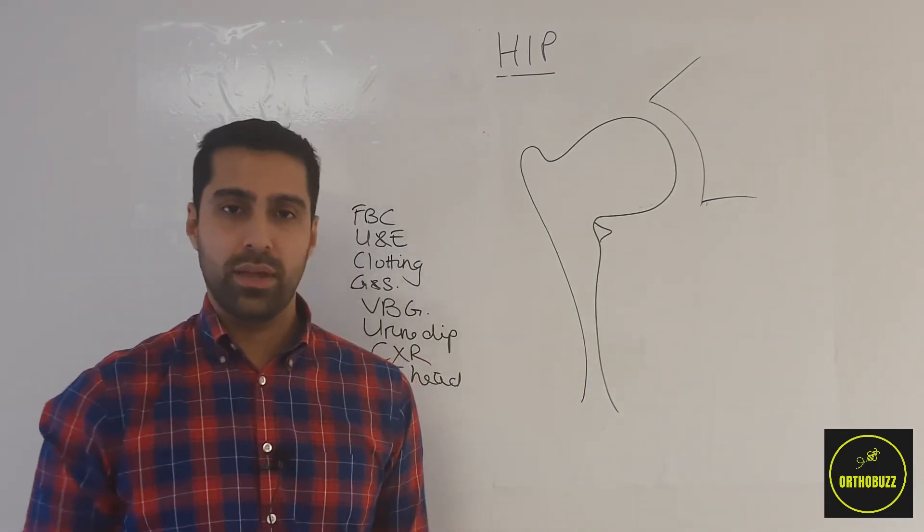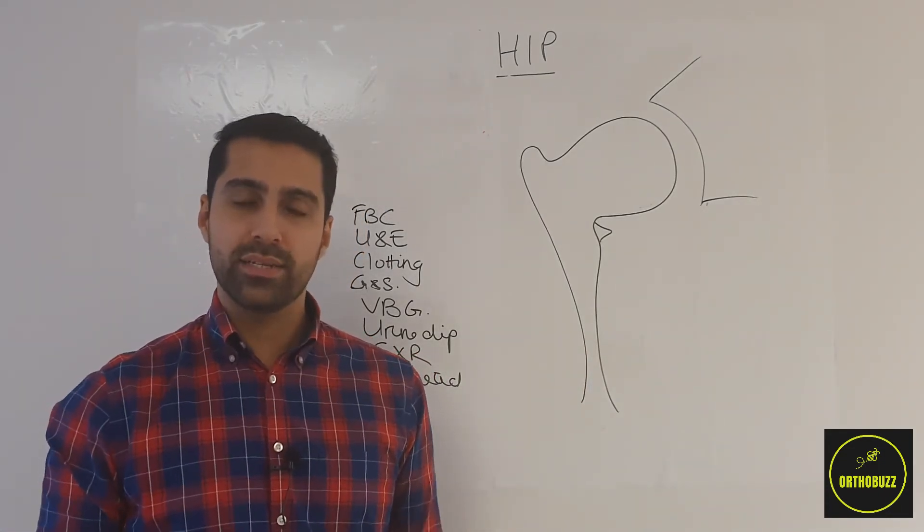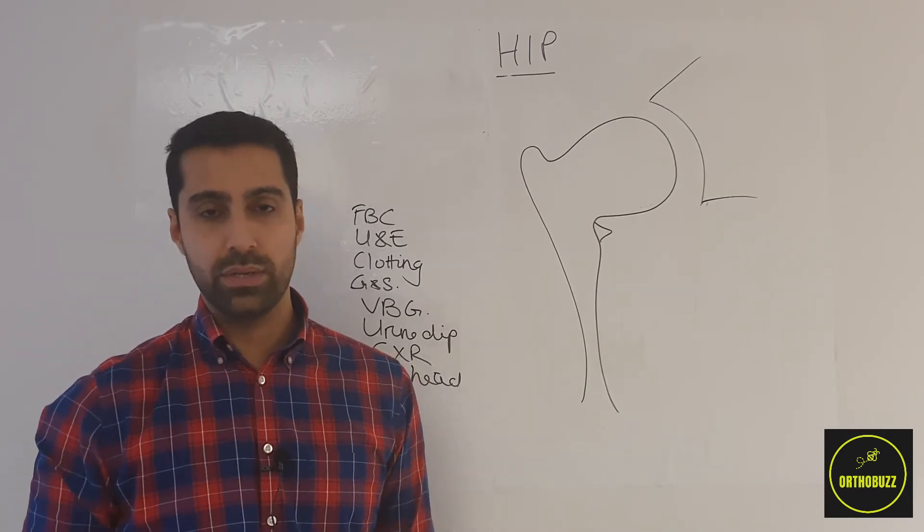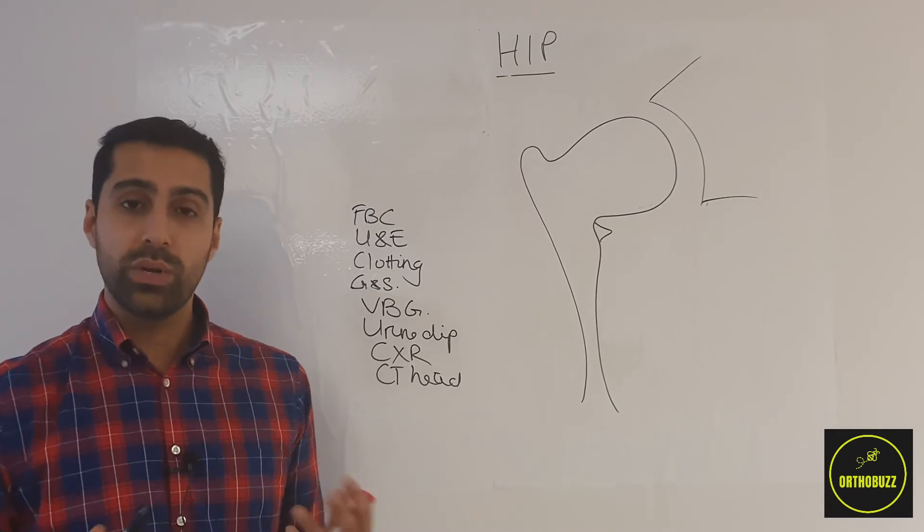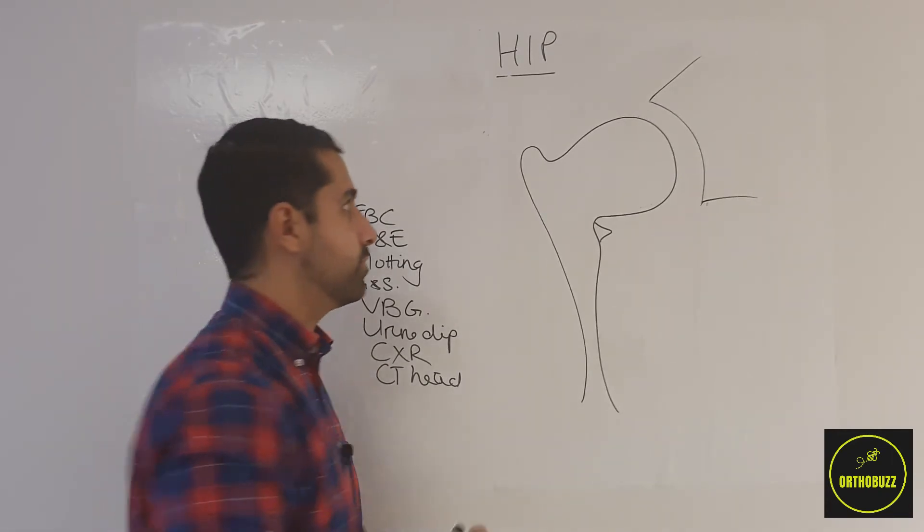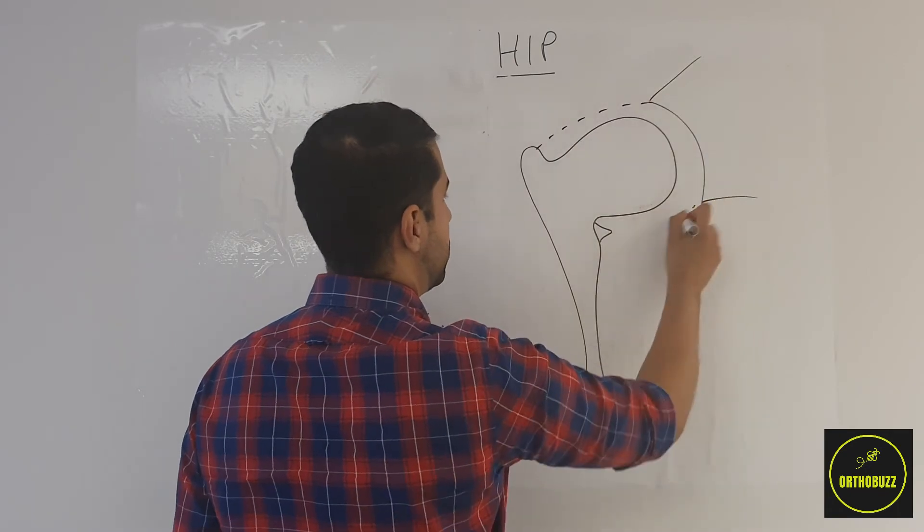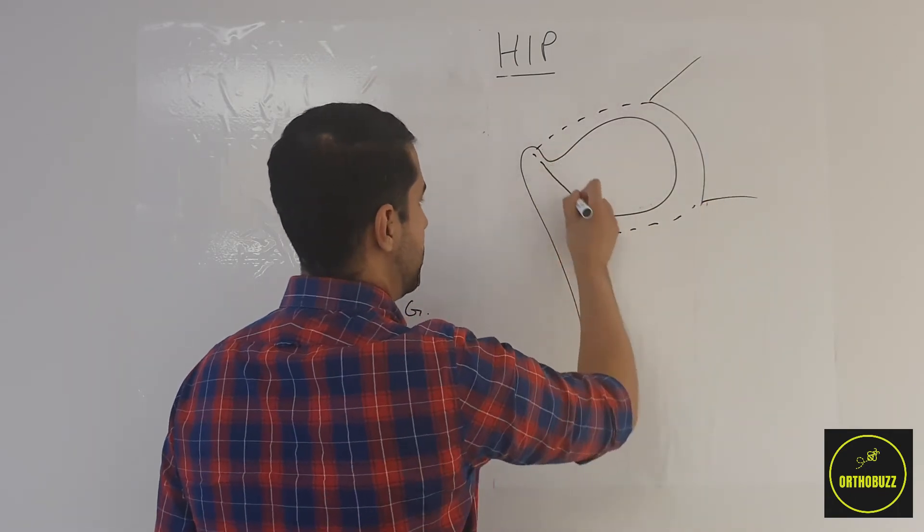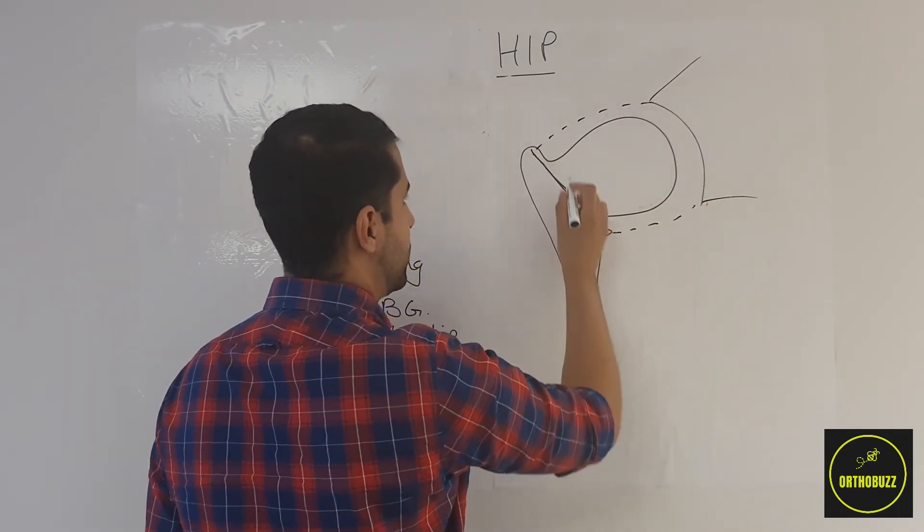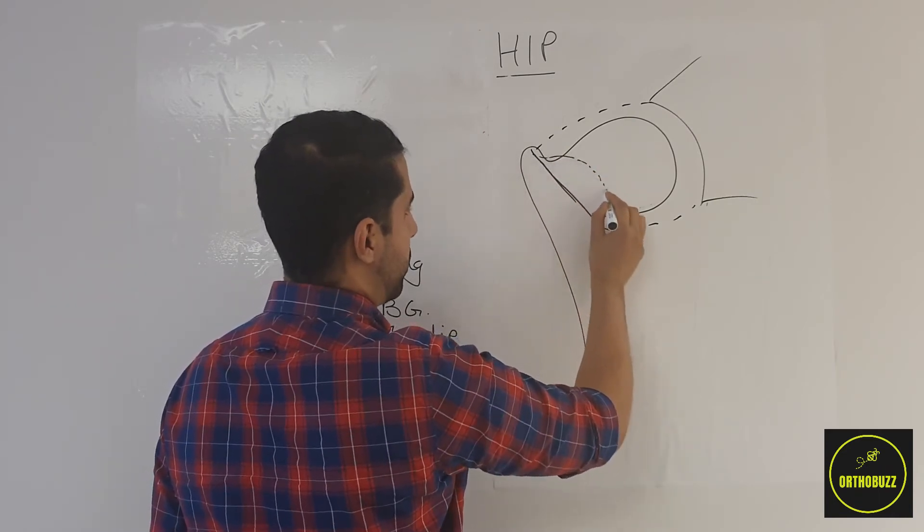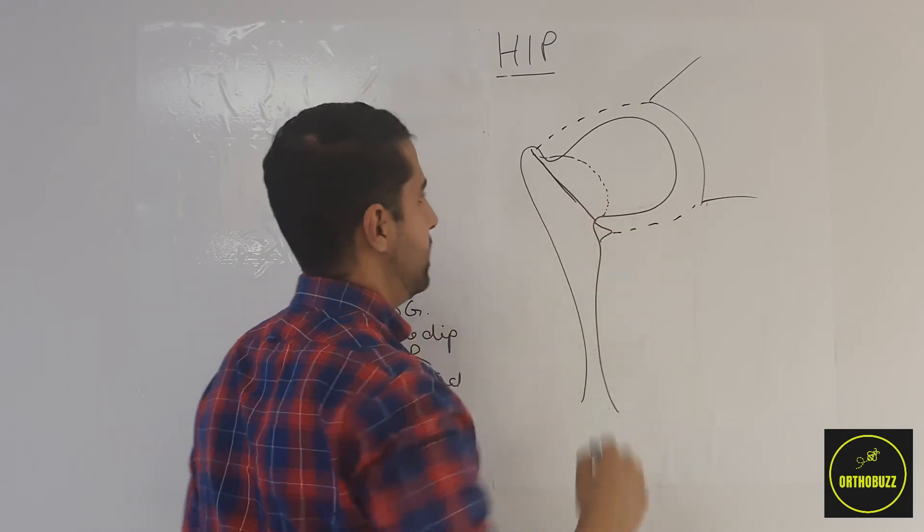Now when assessing hip x-rays, we need to decide whether the break or the fracture is extracapsular or intracapsular, and for us to do this we need to know where the capsule inserts. Anteriorly, the capsule inserts between the trochanters and the intertrochanteric line. Looking at the hip from the back, the capsule would insert more proximally up the neck of the femur.